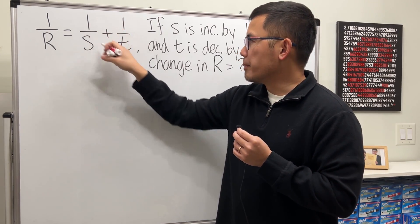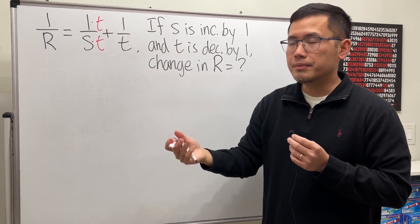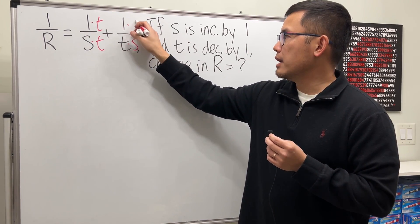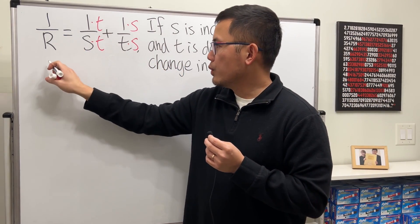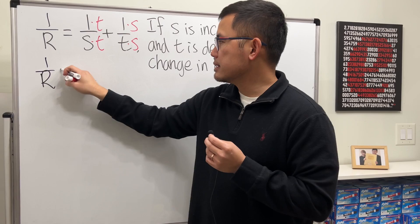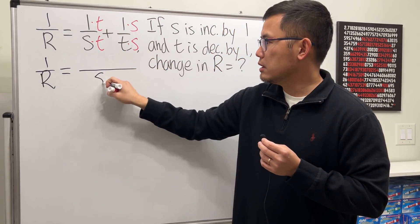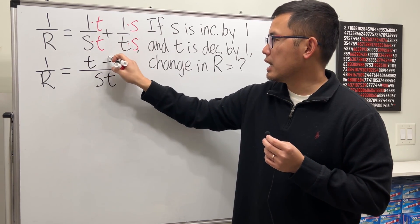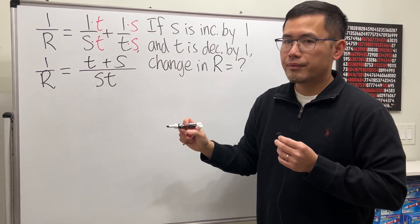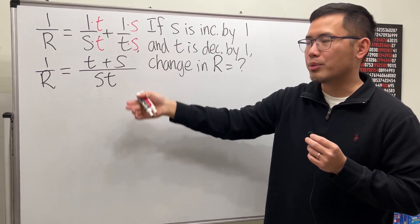To isolate R, let's combine the fractions. I need to multiply T and T to get the common denominator, and then multiply S and S. We get 1 over R equals, with denominator ST, and then T plus S in the numerator.